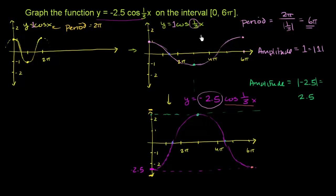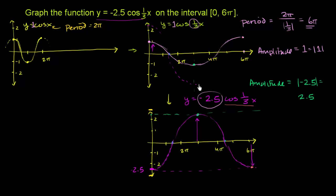By putting 1 third here, it stretched out the graph and increased the period by a factor of 3. Multiplying by negative 2.5 not only increases the amplitude to 2.5, but flips it over the x-axis. The amplitude is 2.5 - the difference between minimum and maximum is 5, so half of that is 2.5. But because of the negative, we flip it over the x-axis and get this reflected version of the graph.